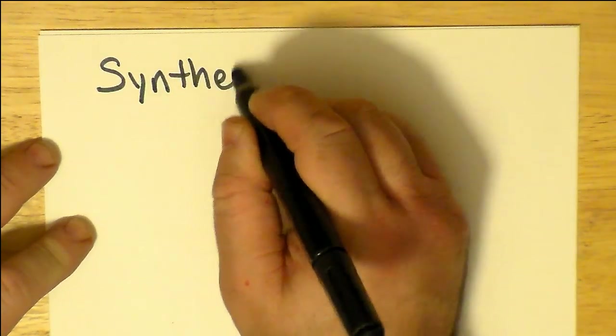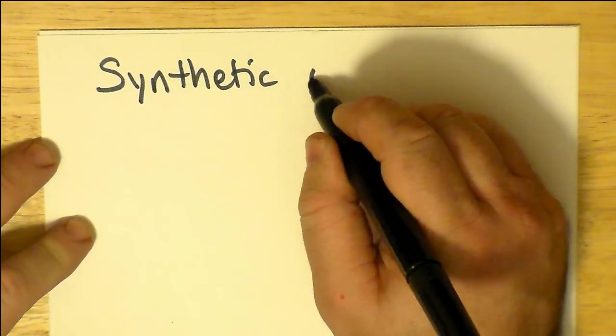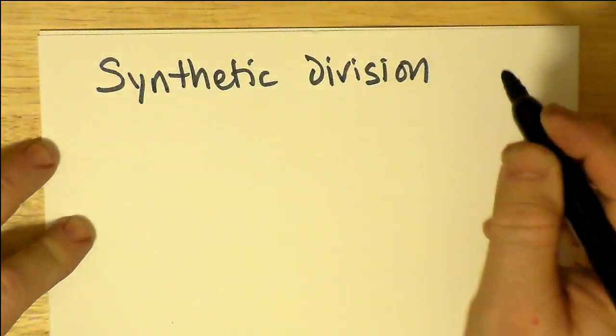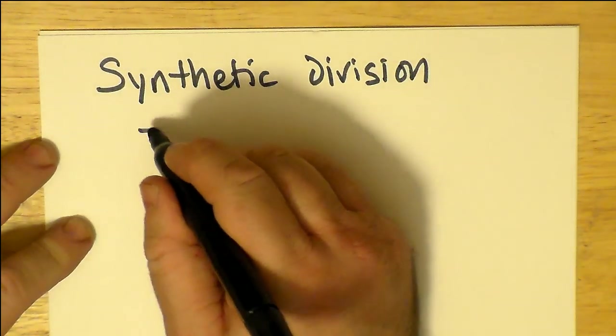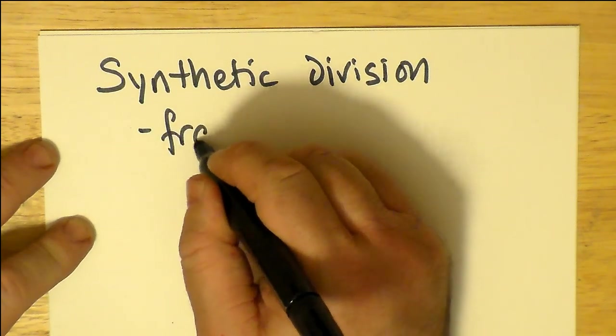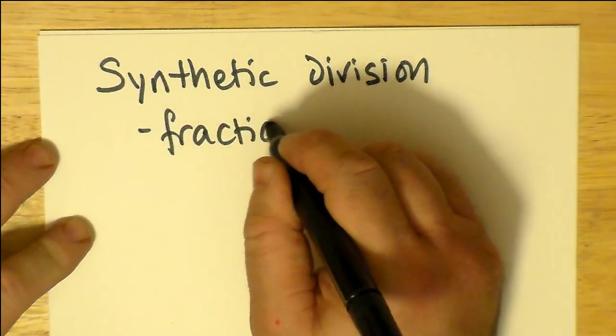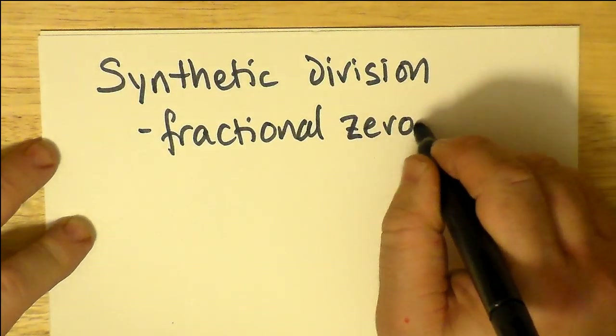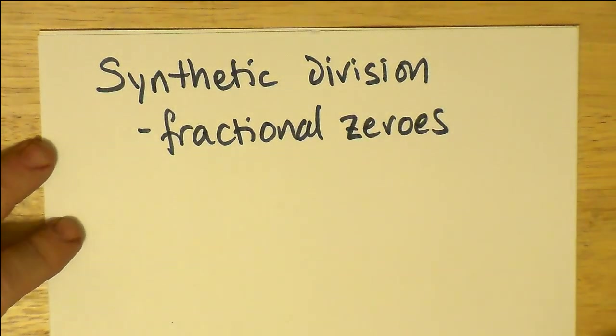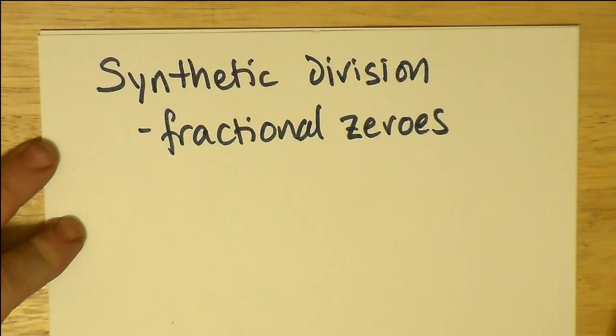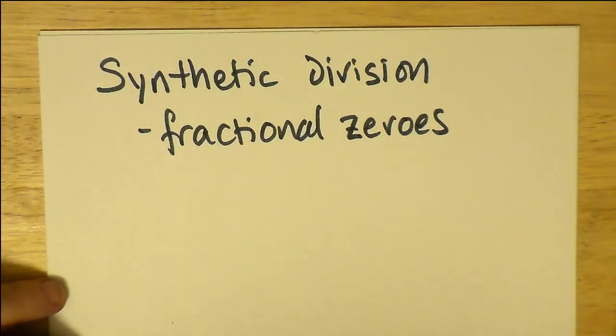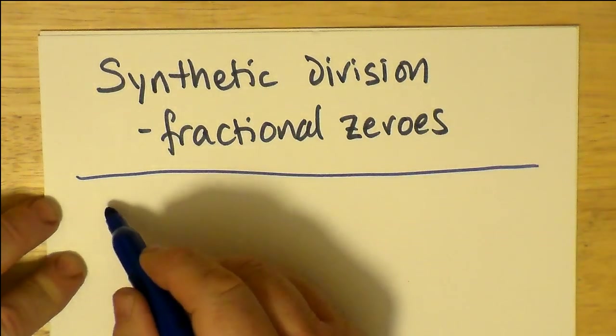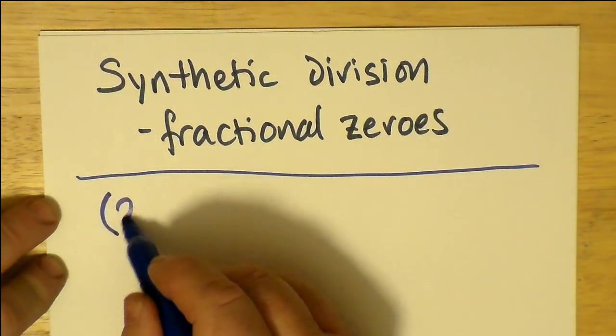Today we're going to have a discussion on a certain narrow aspect of synthetic division, and that is synthetic division where fractional zeros are concerned. This is where some students have a little problem with fractional zeros, because what do you do with those factors anyway? It certainly becomes a rather gray area for a lot of people, but it's actually not gray at all.